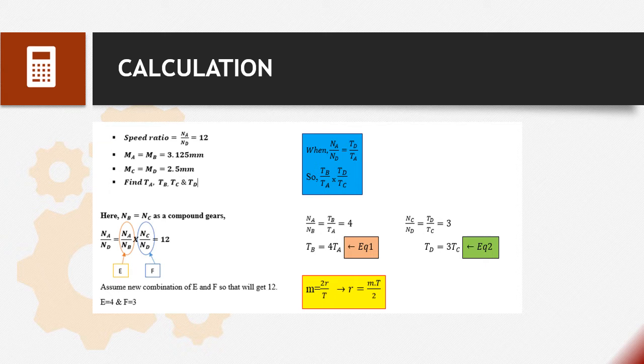Module equals 2R over T. We convert to R equals M multiplied with T over 2.